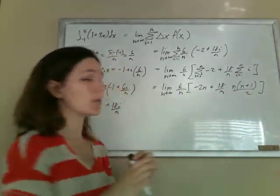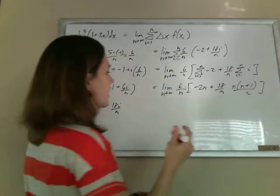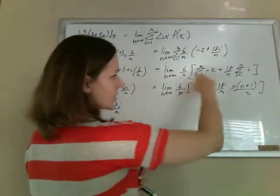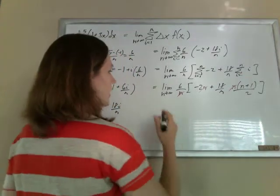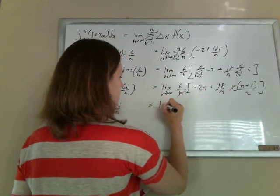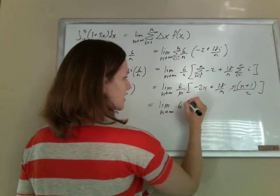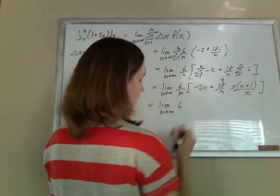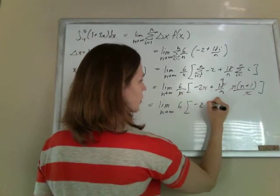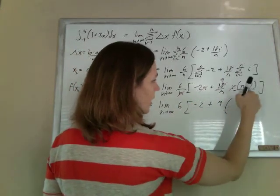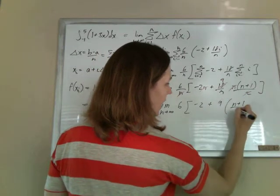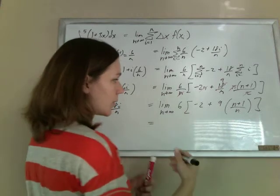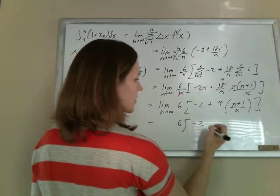When we write it like this, this n will always cancel with a bunch of those n's once it distributes. And now, if we sort of clean this up some more, I've got that 6 out front. I can cancel a 2 with an 18 to make a 9. So this will be negative 2 plus 9. And then I'm going to keep that n plus 1. I'm going to shove that n underneath there. So now when I evaluate this limit, I've got the 6, I've got the negative 2.